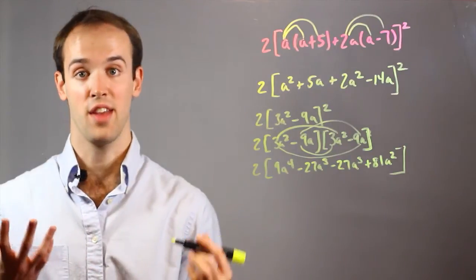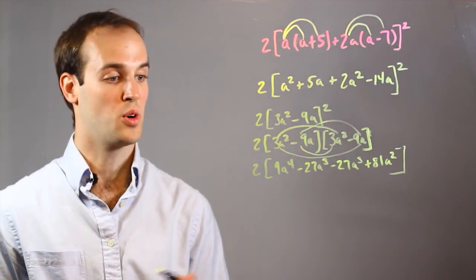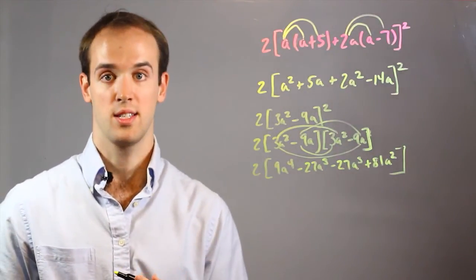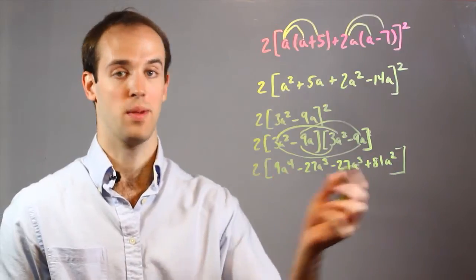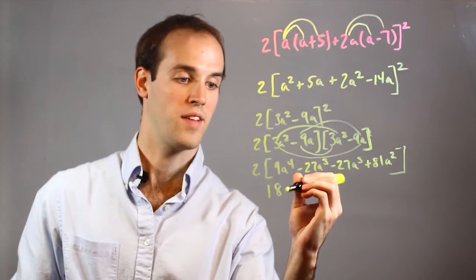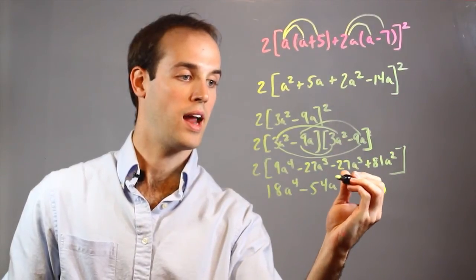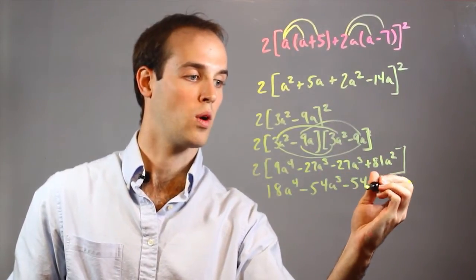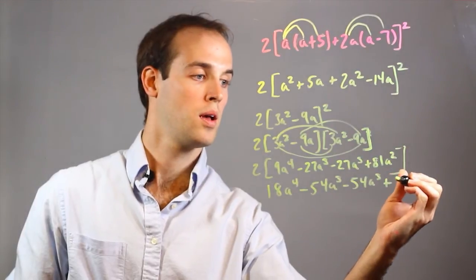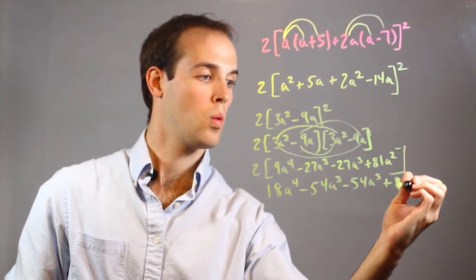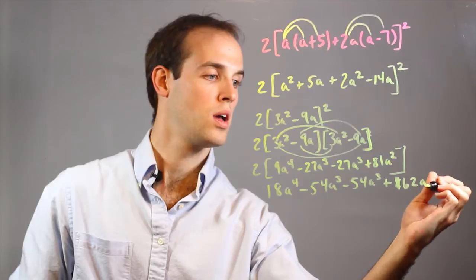And now I've taken care of the exponents. So all that's left to do is to distribute this 2 all the way through to every term inside the brackets. So I have 18A⁴ - 54A³ - 54A³ + 162A².